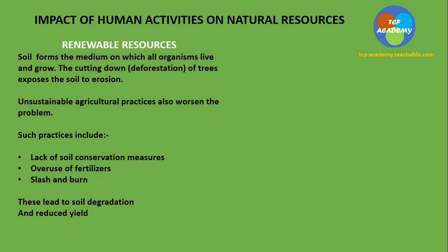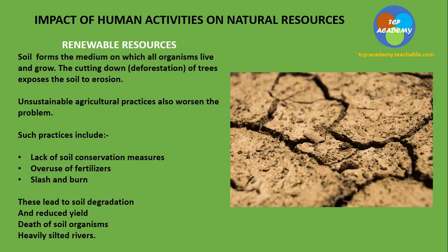These practices lead to soil degradation, reduced yield, death of soil organisms, and heavily silted rivers. Here we're seeing a soil affected by a condition called soil crusting, usually affecting clay soil, and here we're seeing bare soil exposed to the elements of weather, where water has been removed from the soil leaving it in the degraded state we're observing.